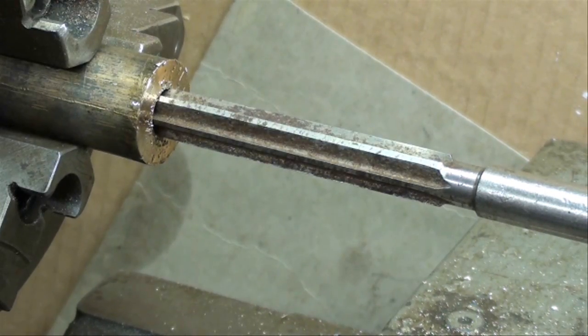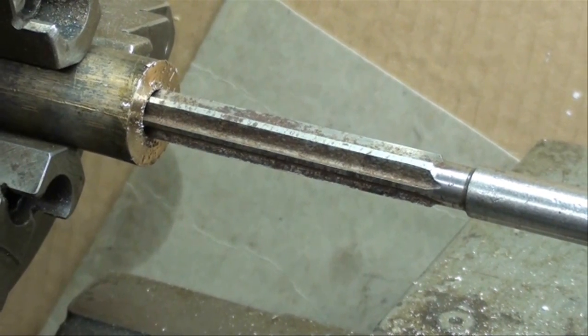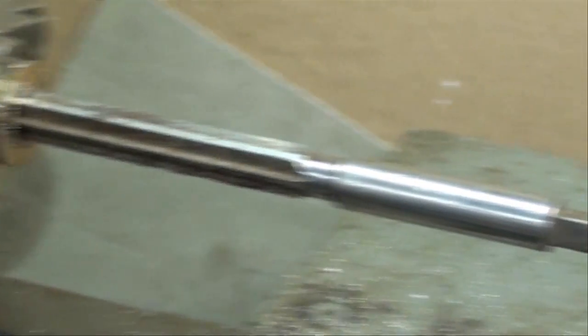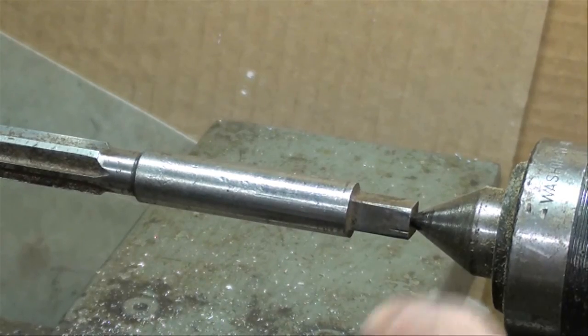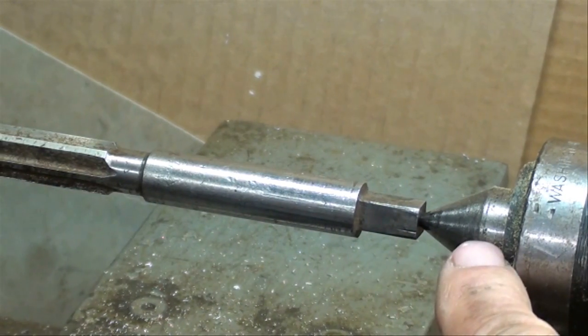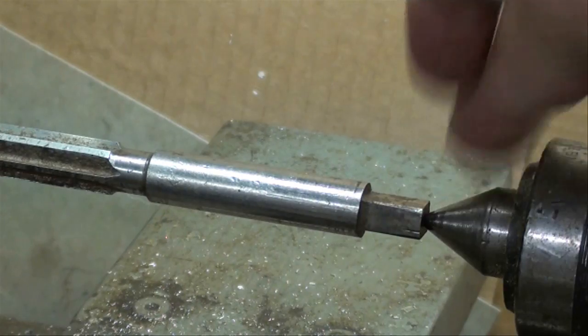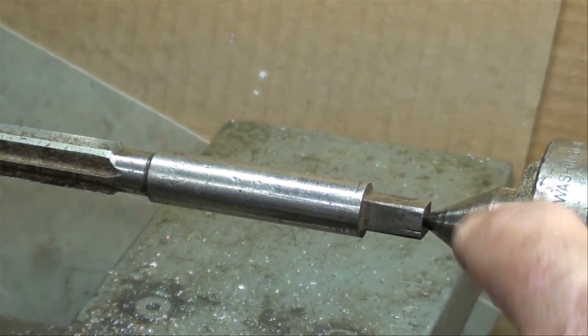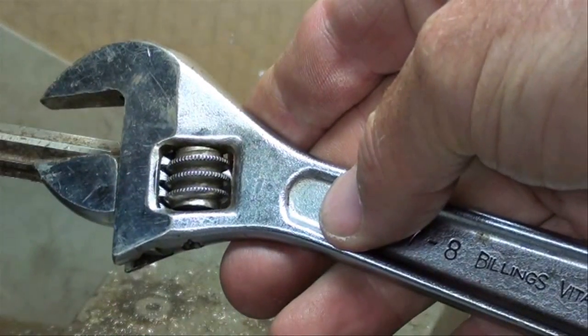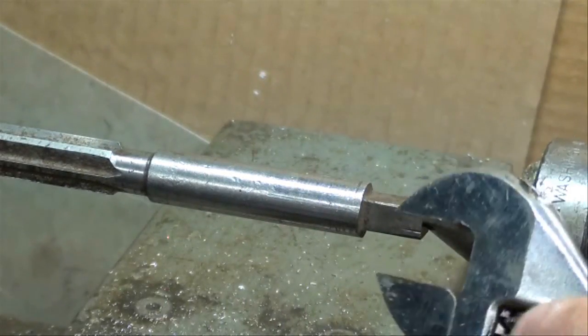First I'll show you how to hand ream. I've got the hand reamer started into the bushing, and notice that it's supported on the other end by a center. This is a ball bearing center, but it could be a dead center.